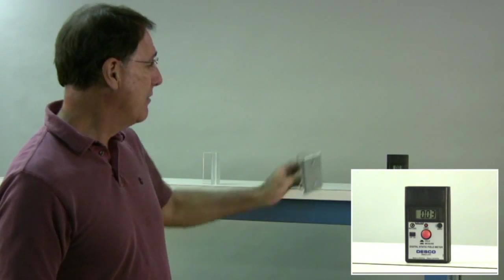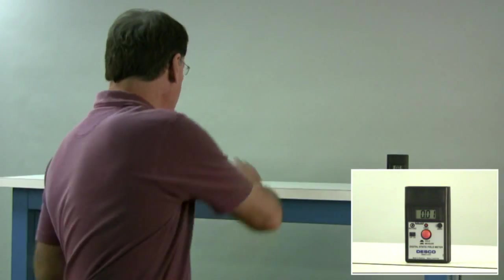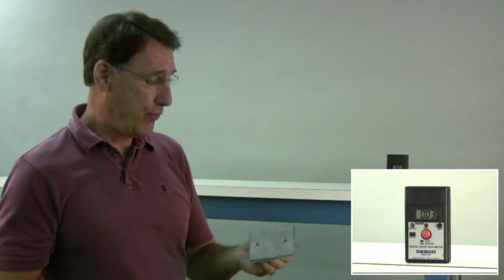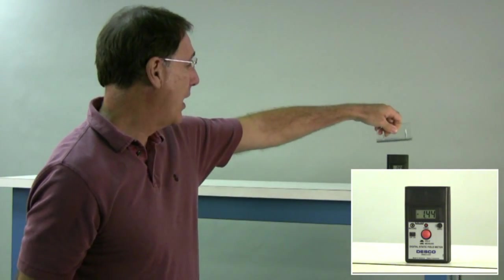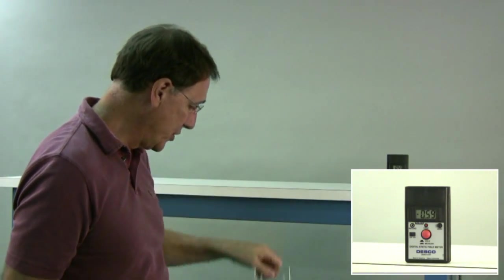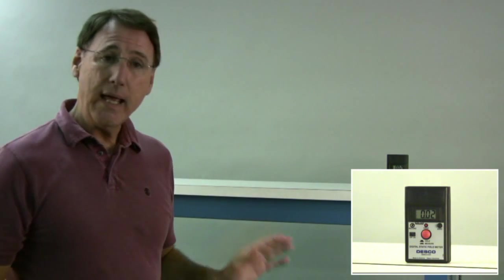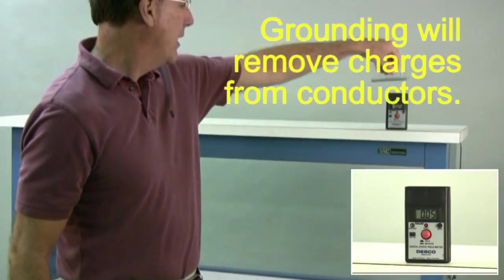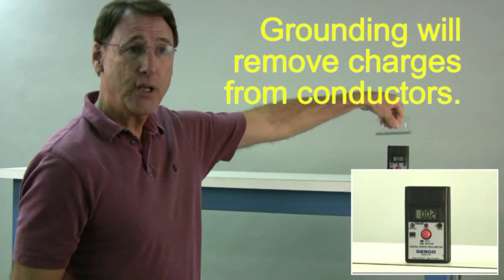So let's see if the charge is still here. No, it's been removed. So let me demonstrate that charges can be removed from a conductor. Here I have several thousand volts. I put it on a grounded, I have a ground wire over here, ESD mat, take it off, and basically all the charge is removed.